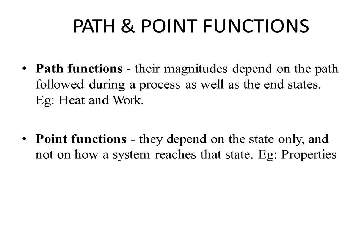Path functions are those whose magnitudes depend on the path followed during a process as well as the end states. Examples of path functions are heat and work. Point functions, or state functions, are those which depend only on the state and not on how the system reaches that state — they are independent of the path. All properties can be considered point or state functions.